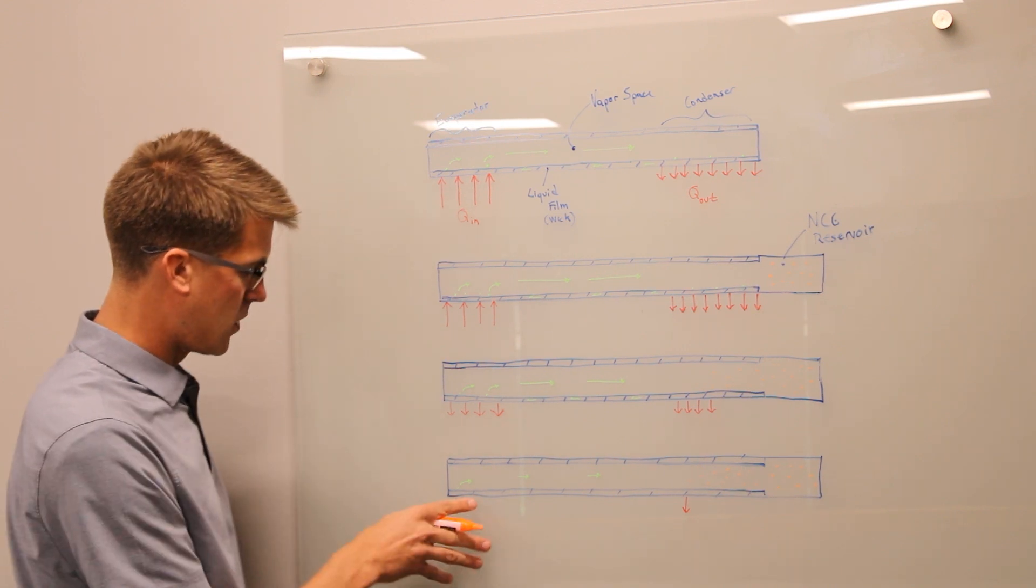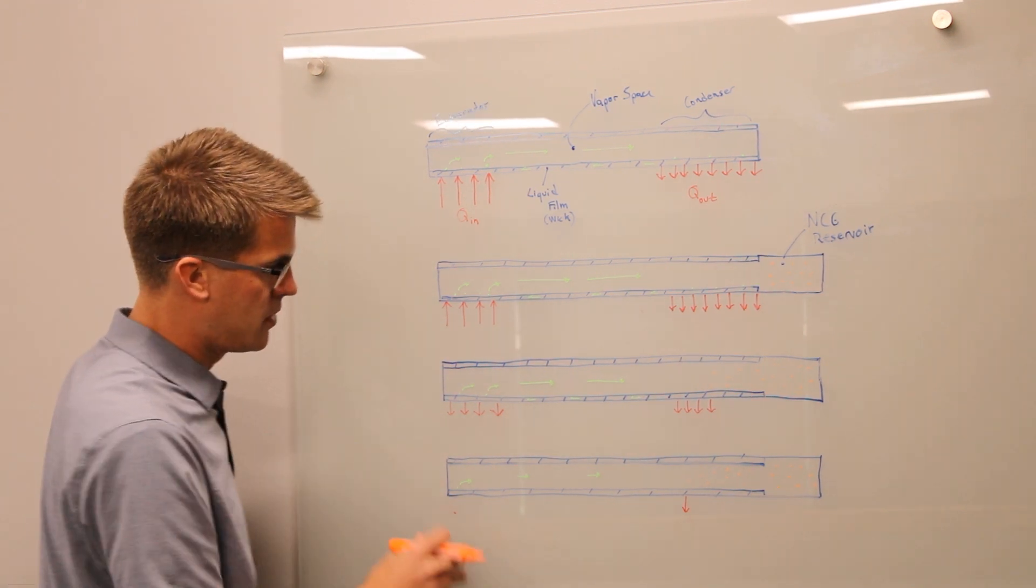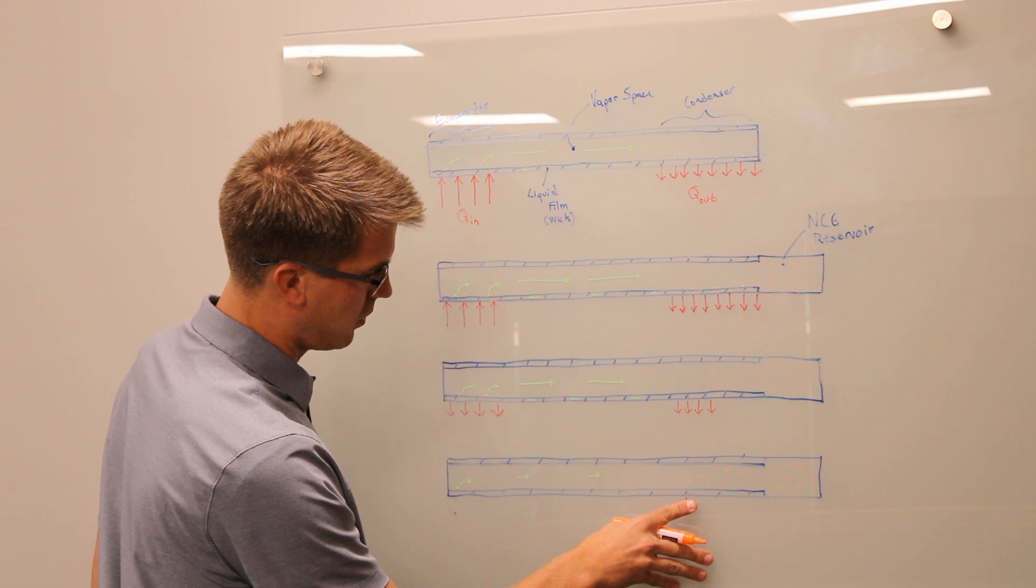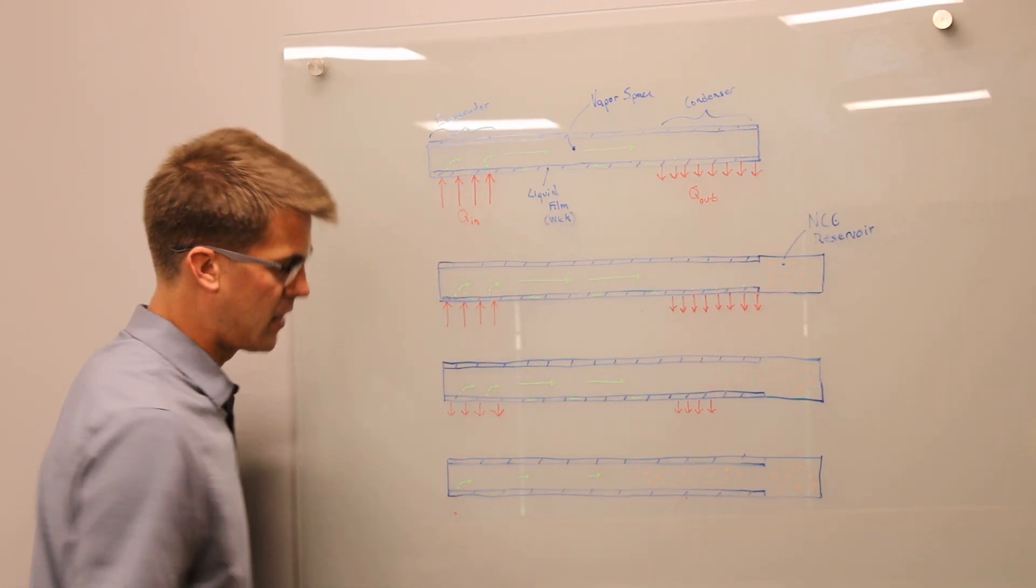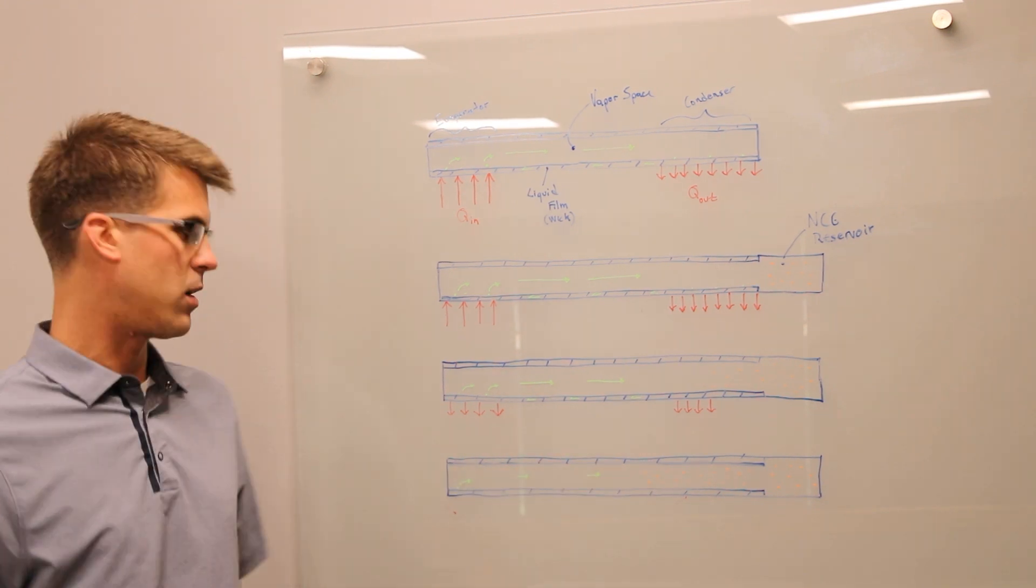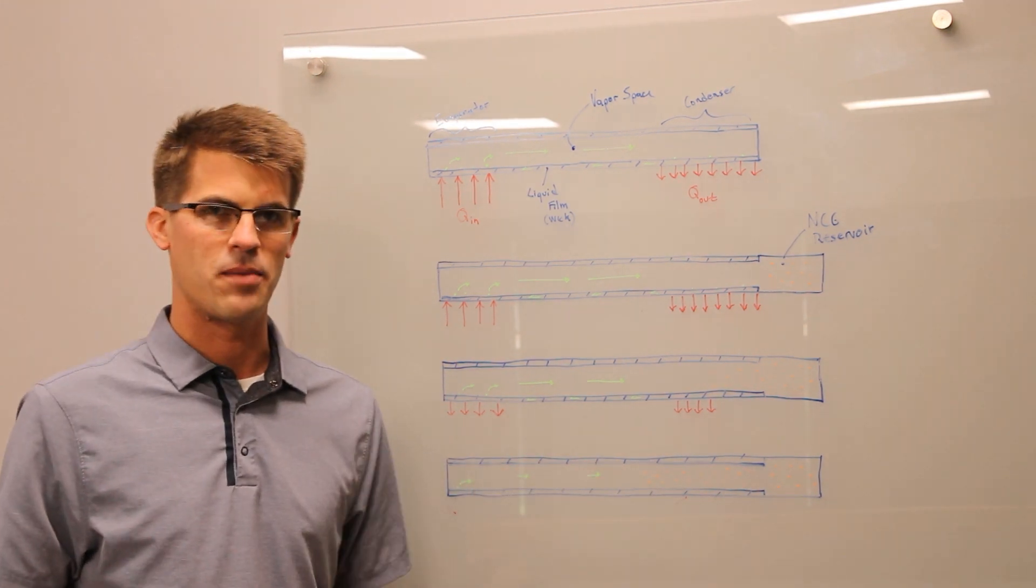So much so that if you decrease this power to none, you will have the ability to actually block the entire condenser section of the heat pipe and your only heat leak pass, therefore, are the conduction through the material of the pipe.